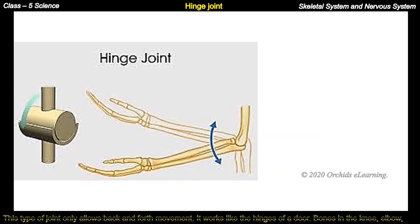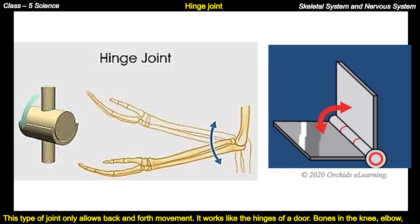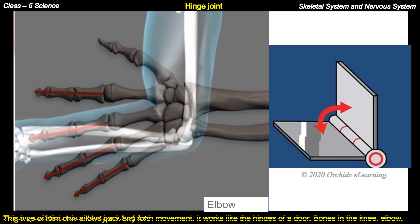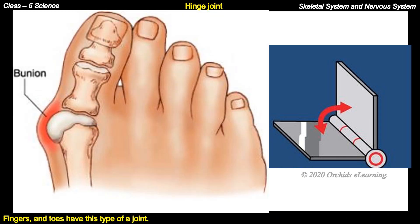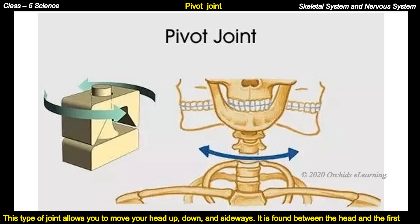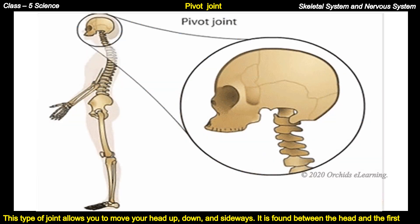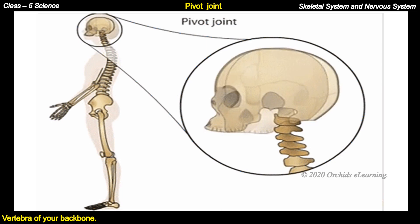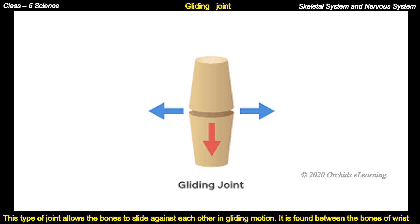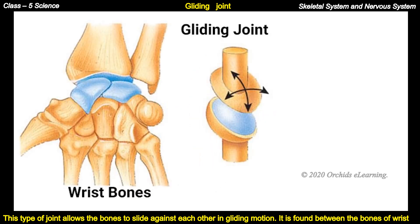Hinge joint: this type of joint only allows back-and-forth movement, like the hinges of a door. Bones in the knee, elbow, fingers, and toes have this type of joint. Pivot joint: this allows you to move your head up, down, and sideways. It is found between the head and the first vertebra of the backbone. Gliding joint: this allows bones to slide against each other in a gliding motion. It is found between the bones of the wrist and ankle.